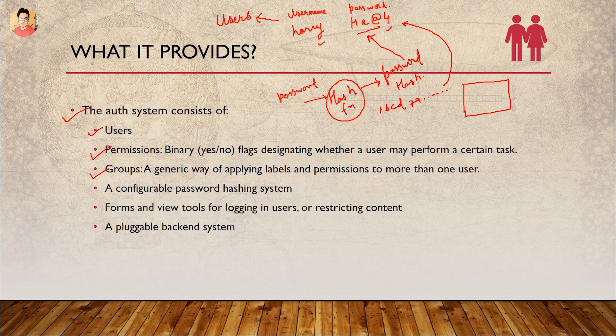This is a configurable password hashing system. The best part about Django's authentication system is that it automatically handles all these things for you — you already have the hashing system in place, groups in place, permission binaries in place, username table in place, everything is there, and you have a pluggable backend system. We already saw Django admin and how awesome it is, and these kind of awesome things make Django more awesome. There are also forms and view tools — we can restrict particular users from accessing something, and we can do a lot of customization that we'll see in future videos.